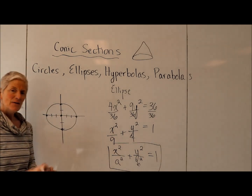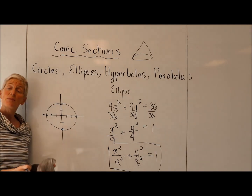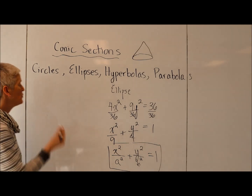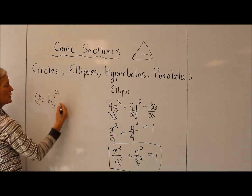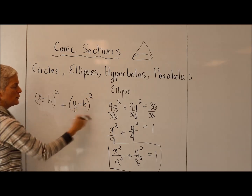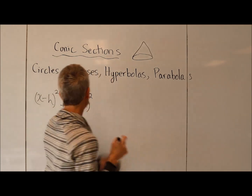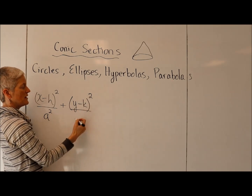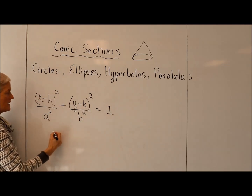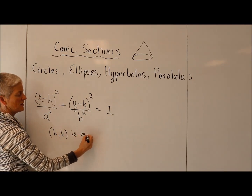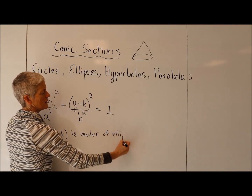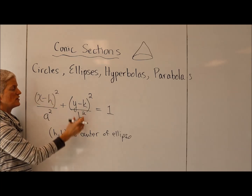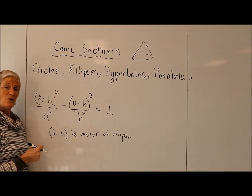You may be asking yourself: if I can shift a circle left and right and up and down, can I do the same thing for an ellipse? And the answer is yes, you sure can. For an ellipse centered anywhere else, our general form — which will look familiar to those who remember the general form of a circle — is: X minus H quantity squared over A squared, plus Y minus K quantity squared over B squared, equals 1, where H, K is the center of the ellipse. And A gives your displacement left and right from the X coordinate of your center, and B gives your displacement up and down.